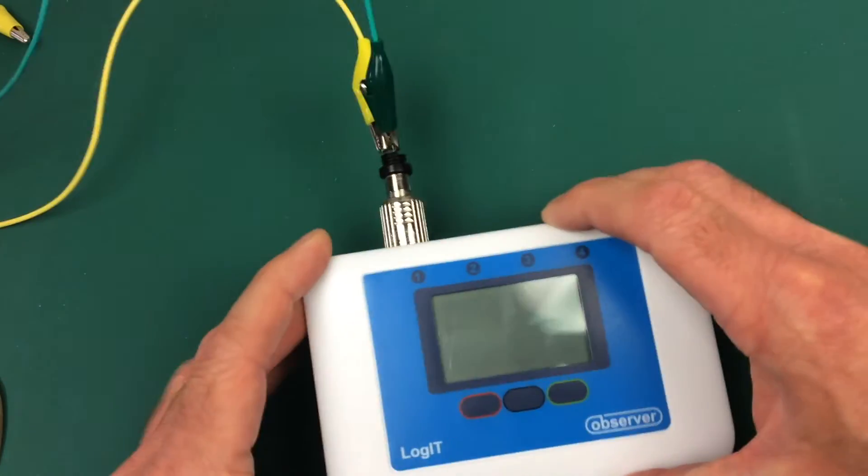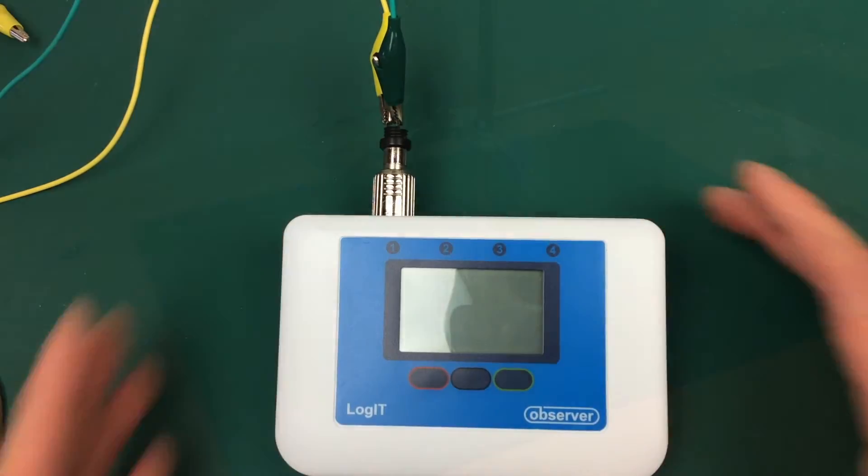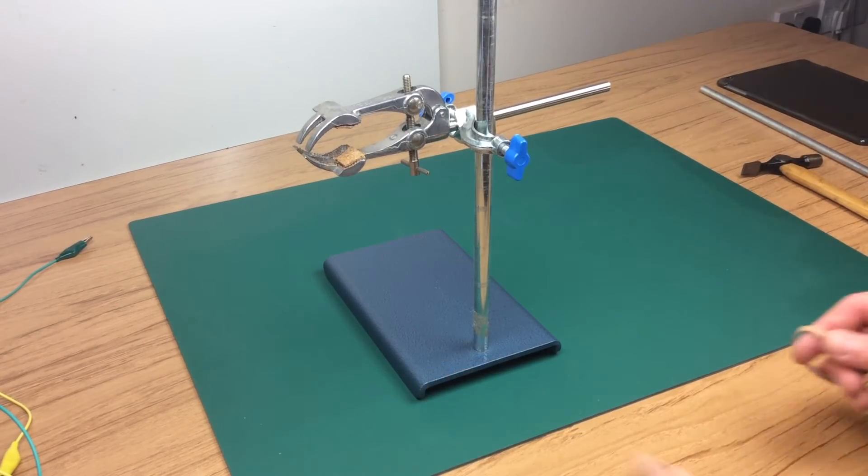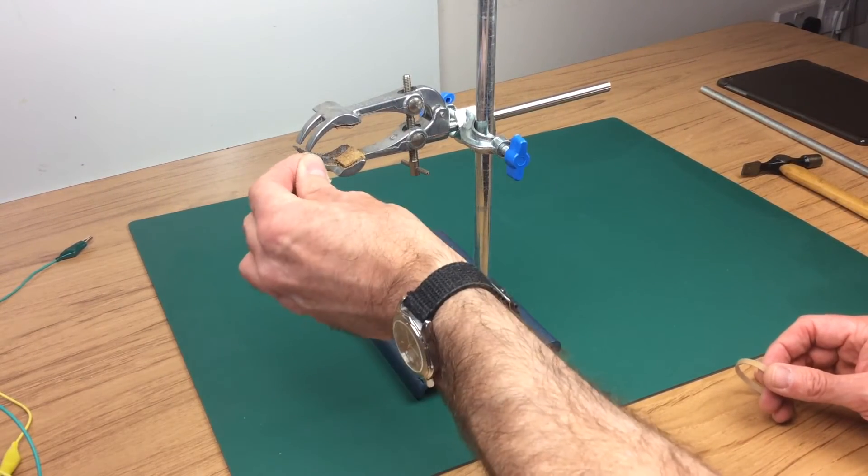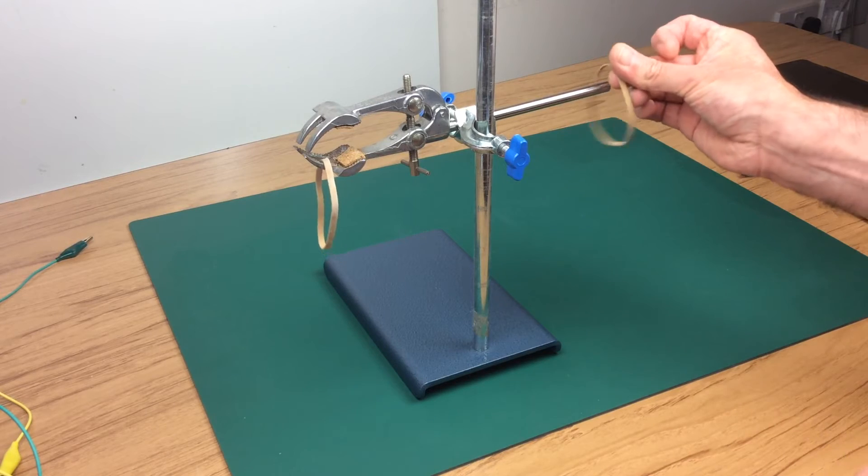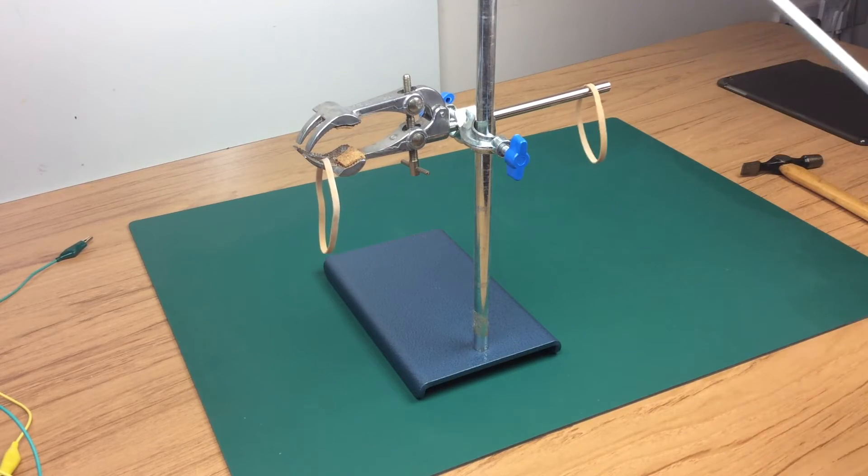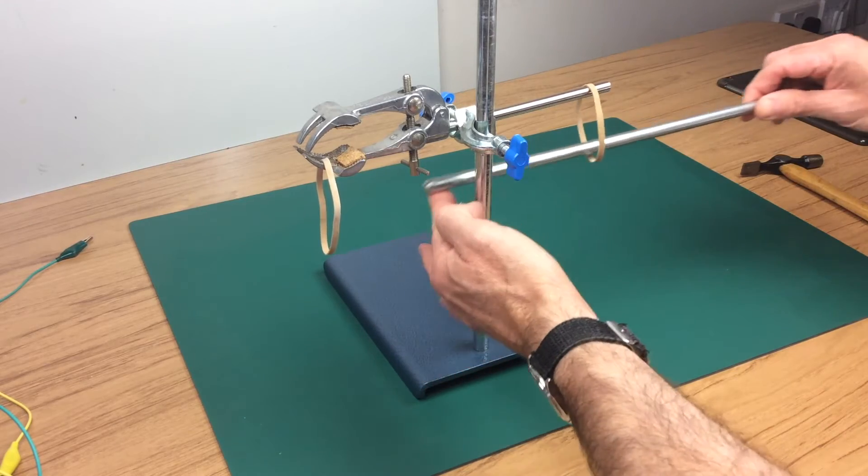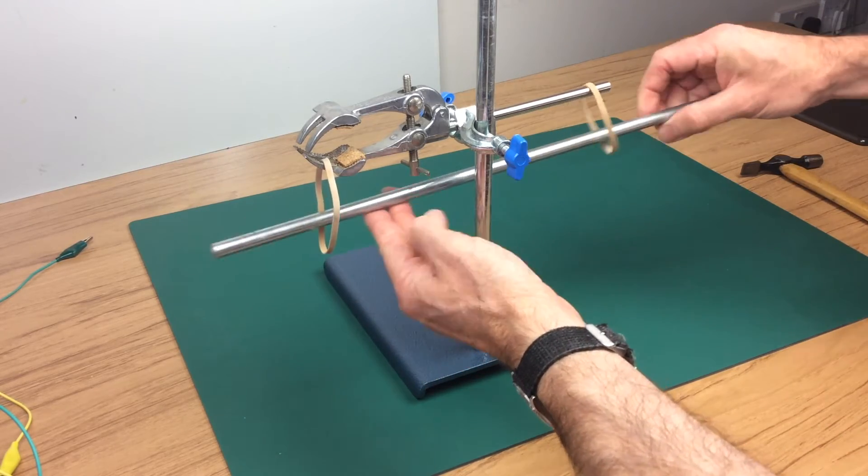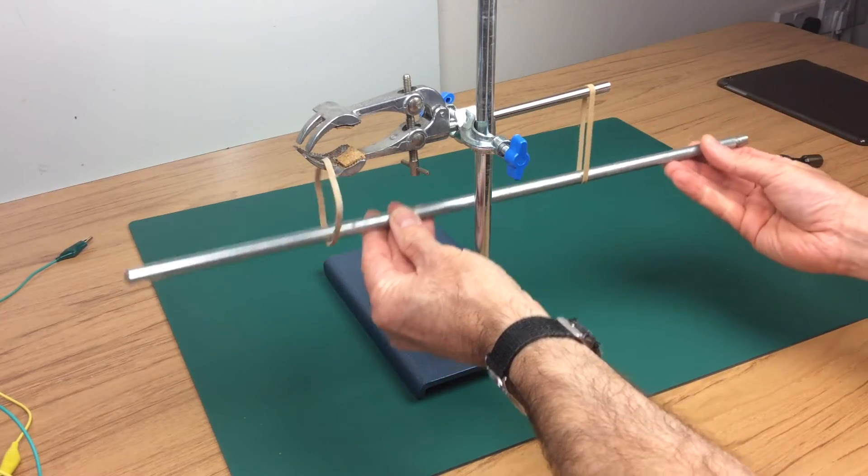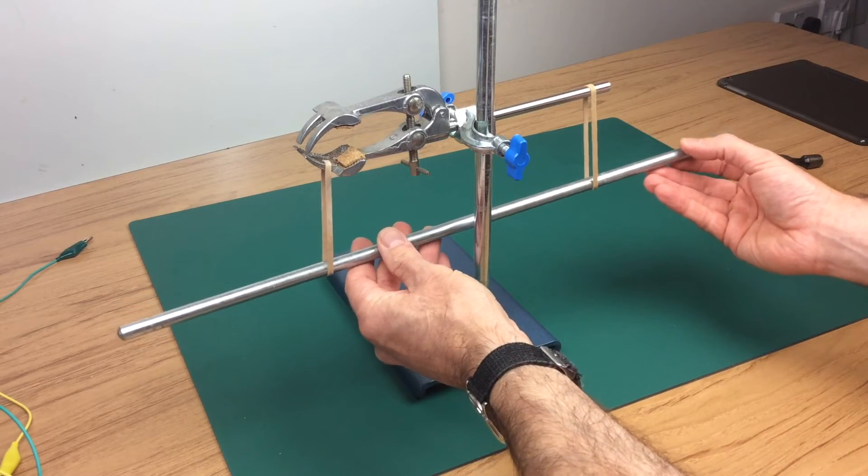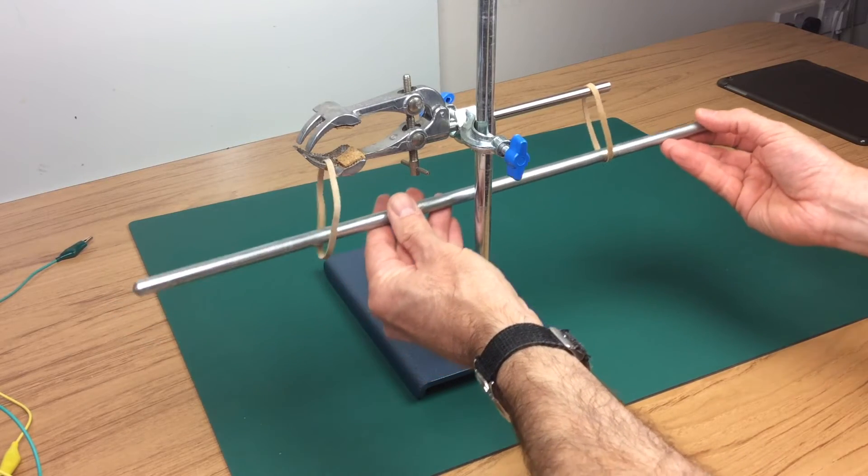Connect to your observer. And with your clamp stand shown, put an elastic band over one end, one over the other. And then with your test rod, place it in the elastic bands so that it's suspended as horizontal as you can make it.